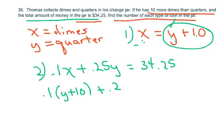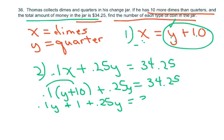And we're going to solve for y, which is my quarters. So I get .1y plus 1 distribute plus .25y equals 34.25. So that's going to give me .35y equals 33.25.